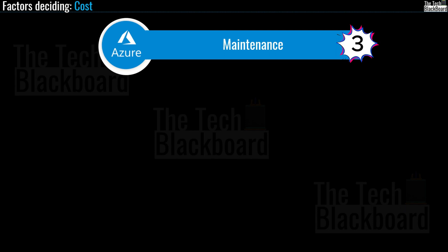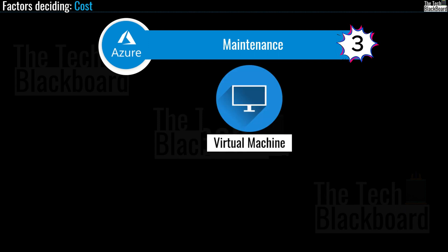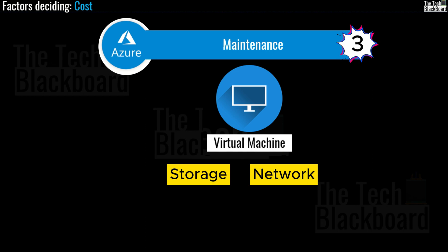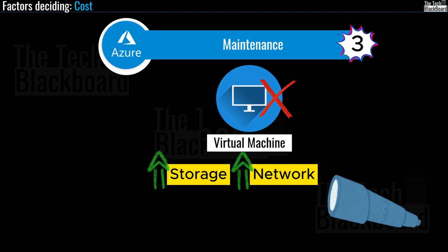Now let's talk about maintenance. To ensure cost control, it's crucial to consistently manage your cloud environment. When you provision a virtual machine, supplementary resources such as storage and networking are also provisioned. However — this is a very critical point — when you deprovision a virtual machine, these additional resources may not be deprovisioned simultaneously. Those additional resources keep existing and adding up to your bill. Good vigilance and monitoring, analyzing resource needs, and promptly removing unnecessary resources can effectively minimize your cloud costs.